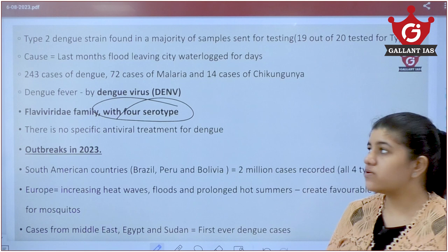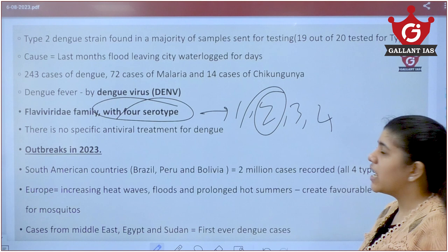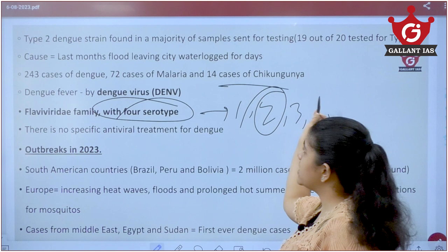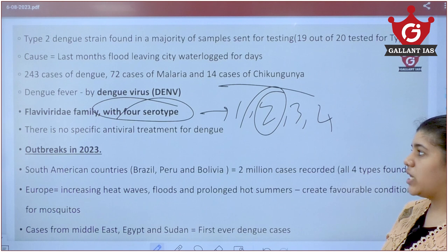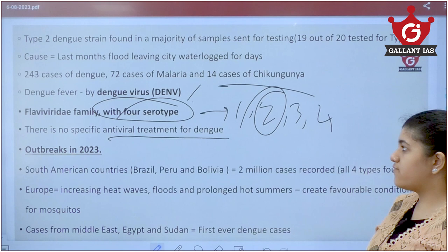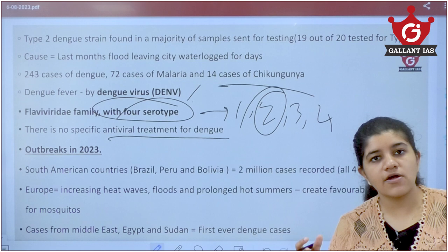In India, particularly Type 2 of Dengue has been found. There are four types of Dengue — Type 1, 2, 3, and 4 — and Type 2 is the most dangerous. India has recorded 243 Dengue cases, 72 Malaria cases, and 14 Chikungunya cases as of July. Dengue fever is caused by the Dengue virus (DENV) of the Flaviviridae family, and there is currently no specific antiviral treatment for Dengue.